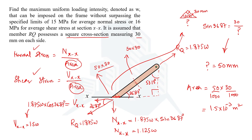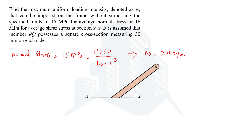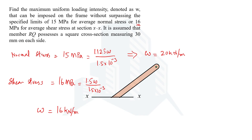Now we have two formulas in terms of normal stress and shear stress. For normal stress: 50 MPa = 1.125W / (1.5 × 10⁻³), solving gives W = 20 kN/m. For shear stress: 16 MPa = 1.5W / (1.5 × 10⁻³), solving gives W = 16 kN/m. We have now calculated the required value — the intensity of uniform loading acting on the PQ member.